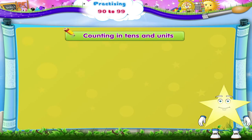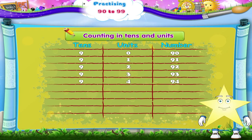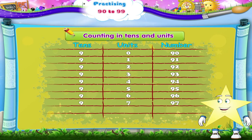And counting in tens and units, we get: 9 tens 0 is 90; 9 tens 1 is 91; 9 tens 2 is 92; 9 tens 3 is 93; 9 tens 4 is 94; 9 tens 5 is 95; 9 tens 6 is 96; 9 tens 7 is 97; 9 tens 8 is 98; and 9 tens 9 is 99.